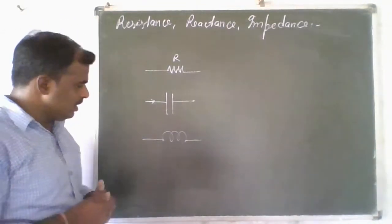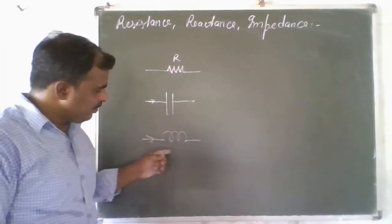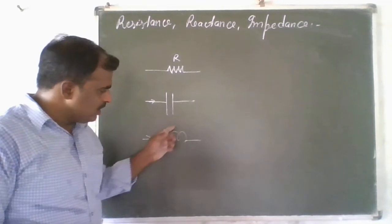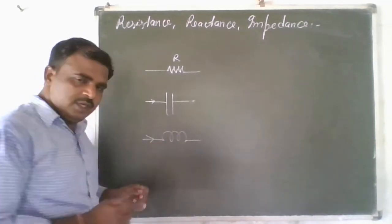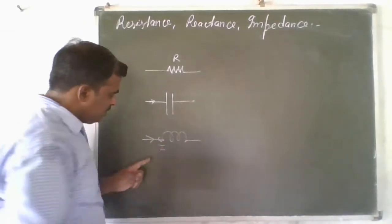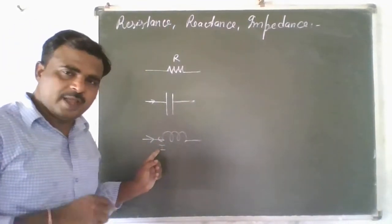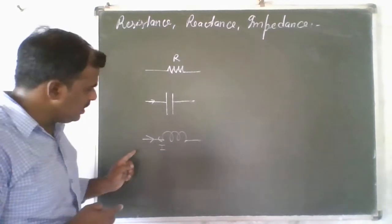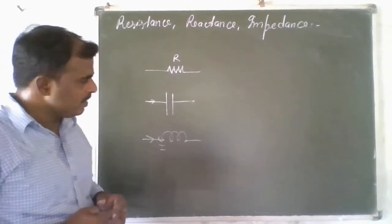Similarly, if current is flowing in an inductor, then a magnetic field is produced around it. This variation in magnetic flux produces an induced current in the opposite direction. This induced current opposes the flow of the primary current. This opposition nature is known as the reactance of the inductor.